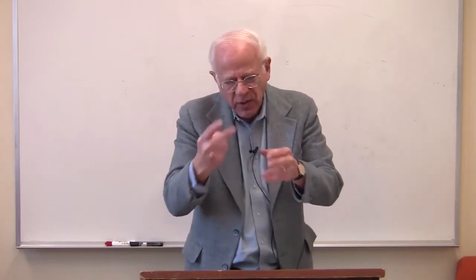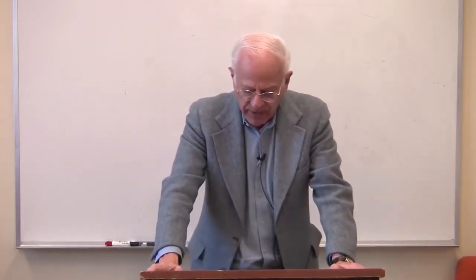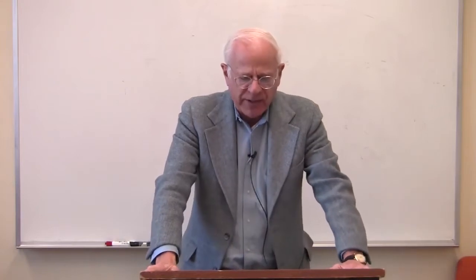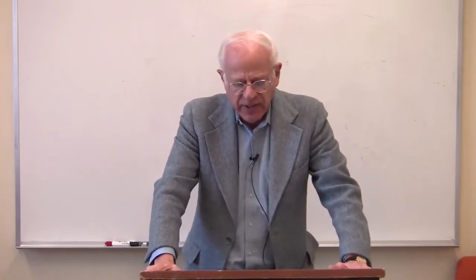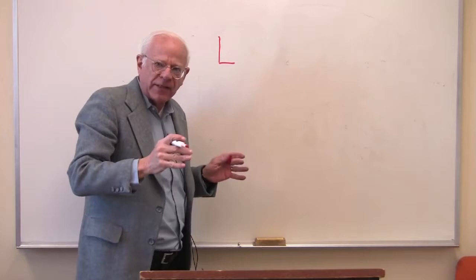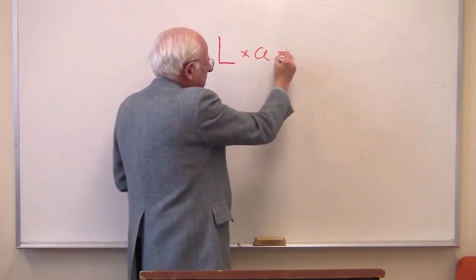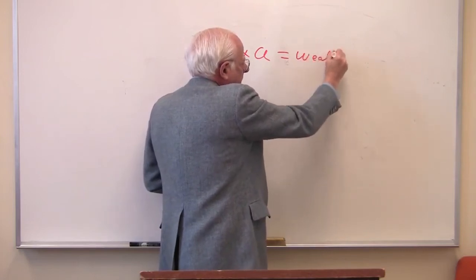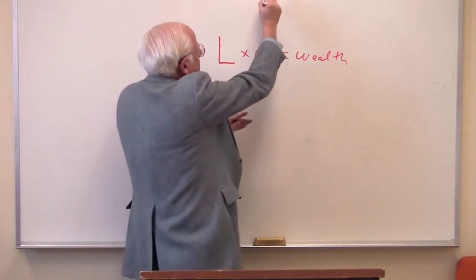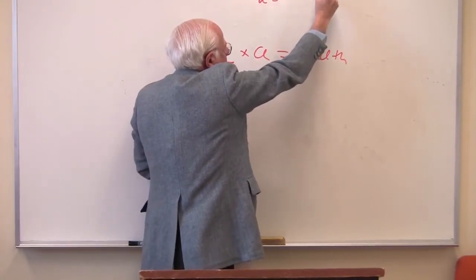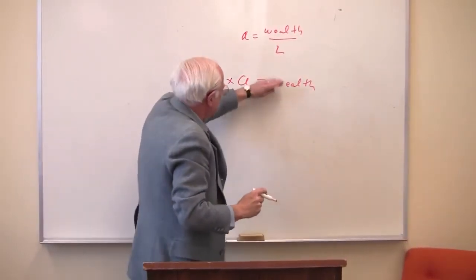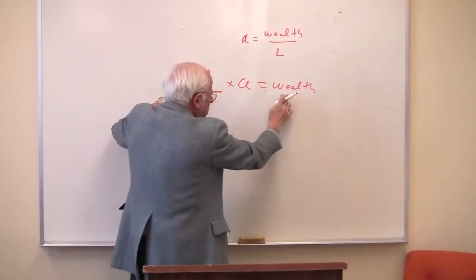The Marxian tradition has focused on two economic conditions. One of them is the labor process times a certain productivity, which gives us wealth. Let me write that on the blackboard in red. The labor process times the productivity of that labor gives us wealth. We have a labor process and its productivity — A times L gives us the wealth of society.